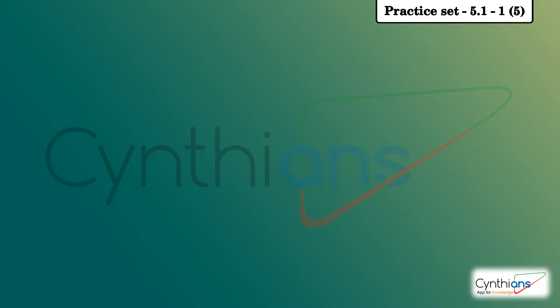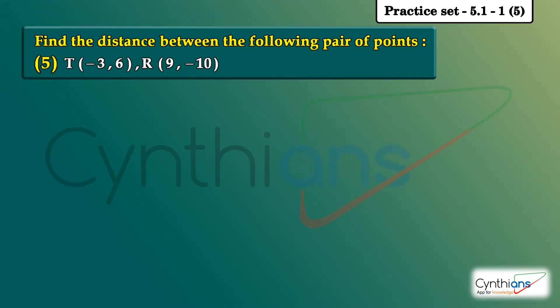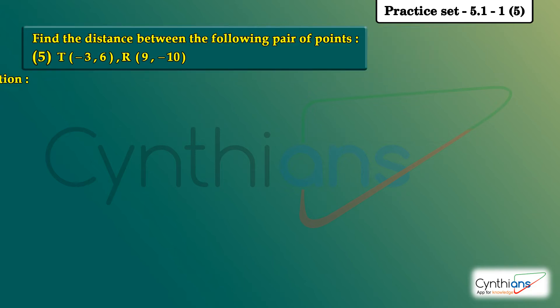So let's solve sub question number 5. Two points given here are T and R. The coordinates of T given are minus 3 comma 6, coordinates of R given are 9 comma minus 10. Let's begin with the solution.